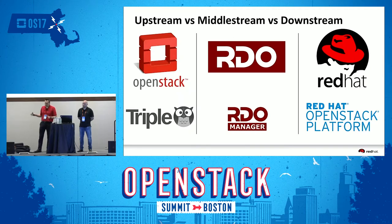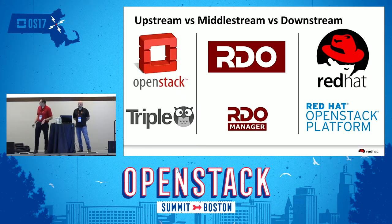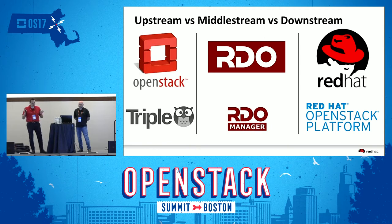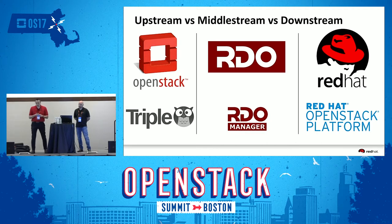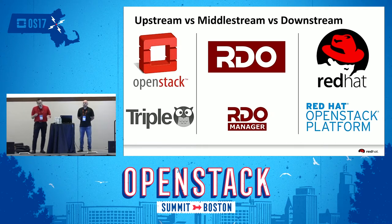I'll try to be as agnostic as possible — there are two slides that are Red Hat related. Everything Red Hat produces in terms of software, we contribute upstream first. In terms of OpenStack, we have this model of upstream, midstream, and downstream. Upstream is Triple O, midstream is the RDO Manager — the one you can download from RDO to deploy Red Hat repackaged RPM bits — and the enterprise version is called Red Hat OpenStack Platform.